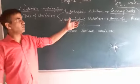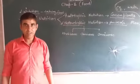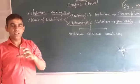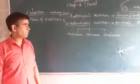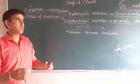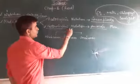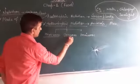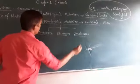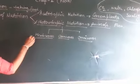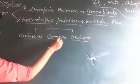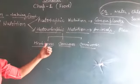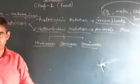Now, talking about the food habits under heterotrophic nutrition — based on food habits, heterotrophic nutrition can be divided into three parts: number one, herbivorous animals; number two, carnivorous; and number three, omnivorous.